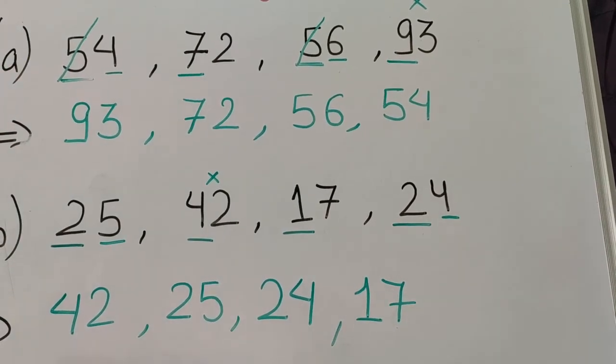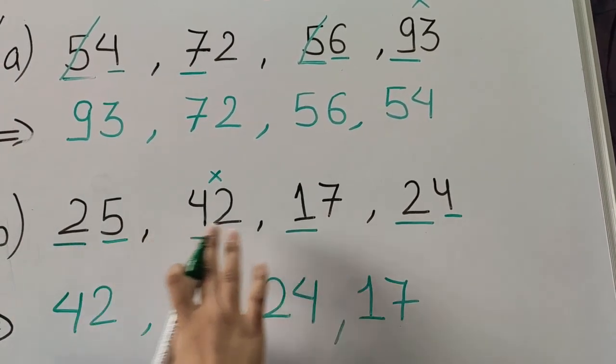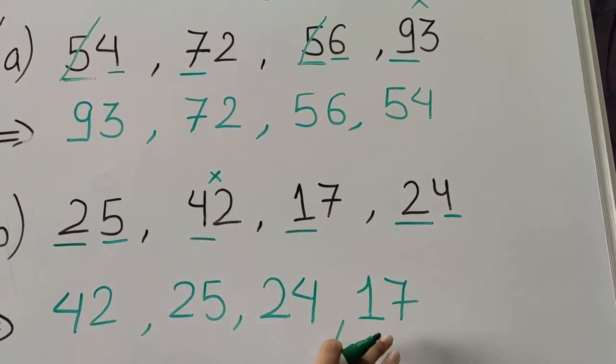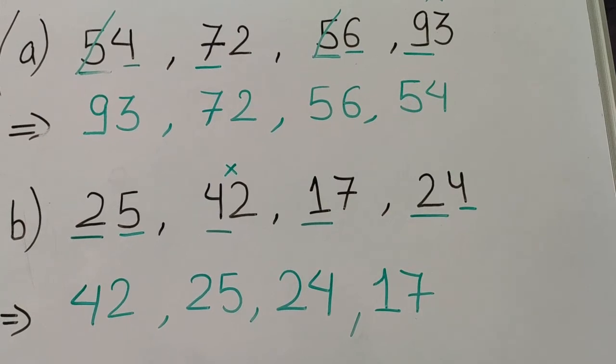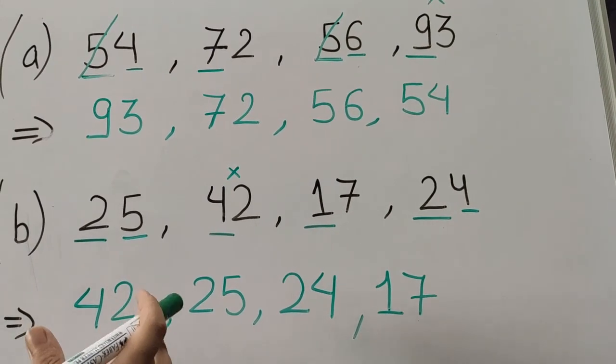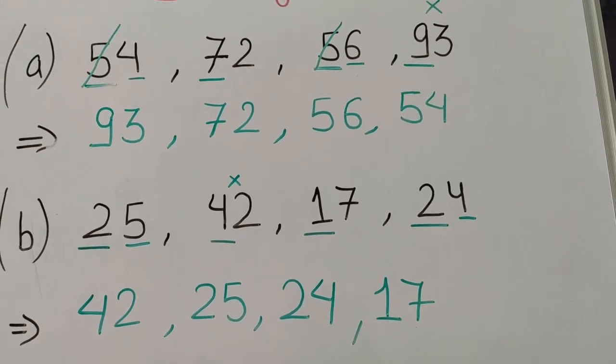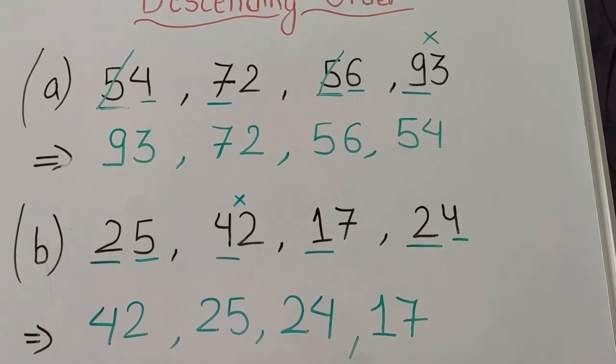So this is the answer to this question. We have arranged these numbers in descending order: 42, 25, 24, and 17.